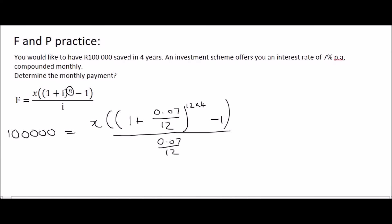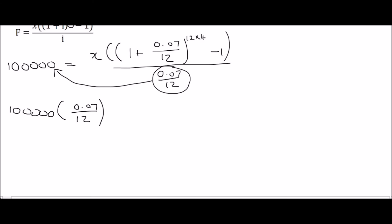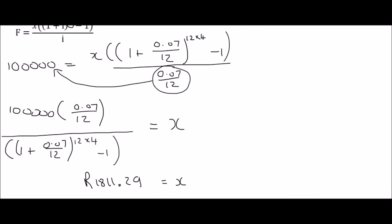Now it's just a matter of getting X by itself. So what students often like to do is they'll first take this part over here to the left by multiplying, and then to get X alone, you would have to divide by this big expression next to the X. And then you could go ahead and type all of that in on the calculator in one step, and you will get an answer of 1811.29. So each month you would have to save 1,811 Rand and 29 cents, so that you would eventually have a final amount of 100,000 Rand in 4 years.